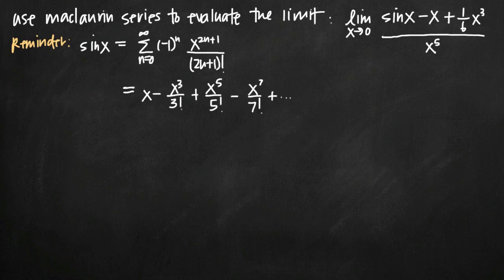Today we're going to be talking about how to use a Maclaurin series to evaluate a limit. In this particular problem, we've been asked to evaluate the limit as x goes to zero of sine of x minus x plus one-sixth x to the third, all divided by x to the fifth.